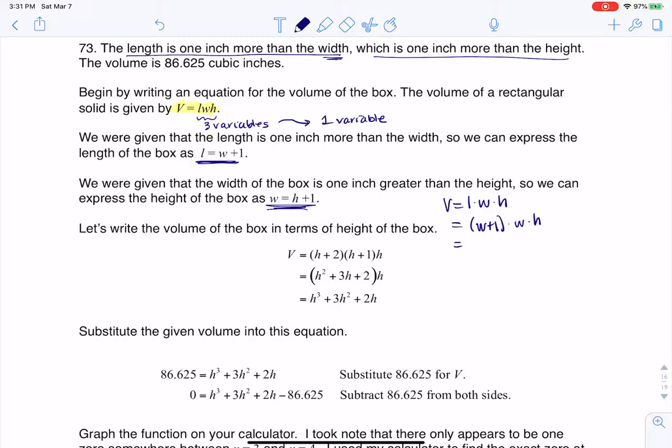Now let's substitute in for W. Every time I see a W, I can write H plus 1. So I have H plus 1 plus 1 times H plus 1 times H. If I simplify that a little bit, I'm going to get H plus 2 times H plus 1 times H, and the good thing about that is I only have one variable on this side now.